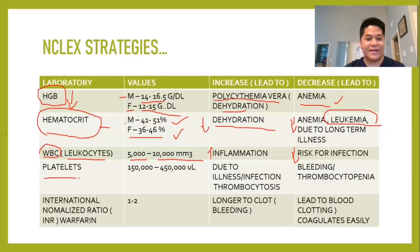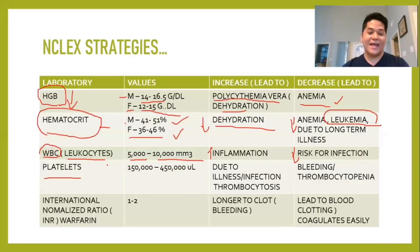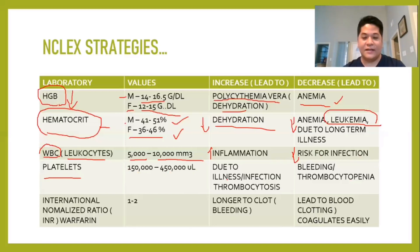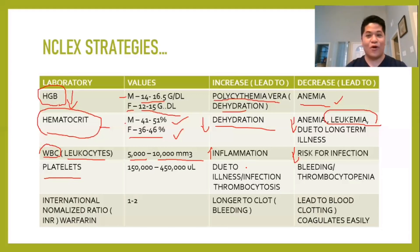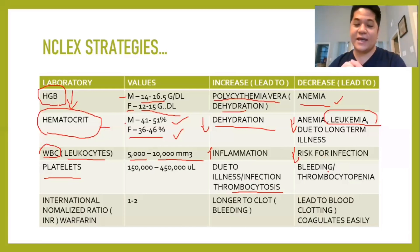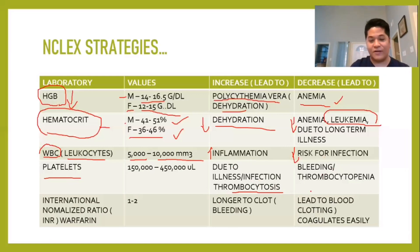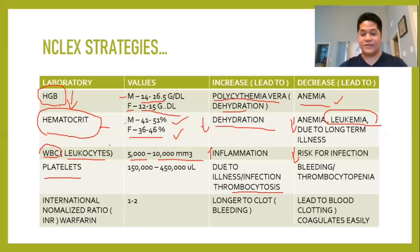Next are platelets, which are responsible for clotting and thereby preventing bleeding. The normal value is 150,000 to 450,000 units per liter. If platelets increase, it is due to an illness or infection where the bone marrow keeps producing in response to injury — this is called thrombocytosis. If platelets go down, you are at risk for bleeding. If platelets are very low, like 10,000, you may bleed from the eyes, nose, ears, and internal organs — this is called thrombocytopenia.